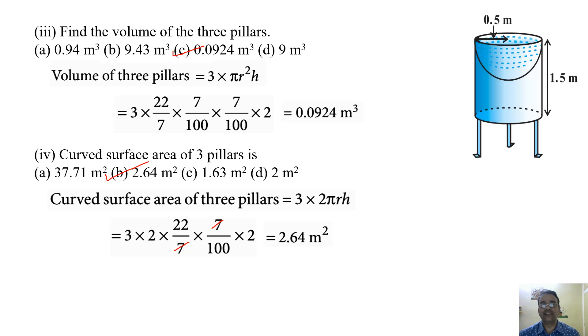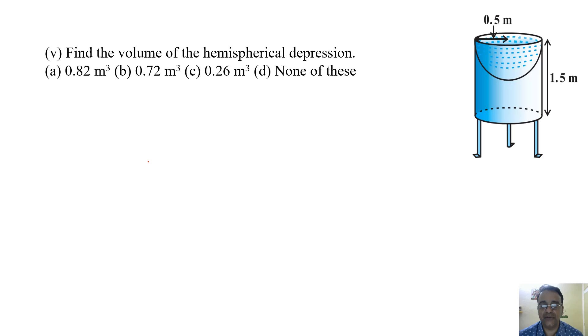Now we are moving toward the last question. Find the volume of the hemispherical depression. We know the volume of hemisphere is 2/3 πr³. So now we will substitute the value of π, 22 by 7, and r is 0.5.